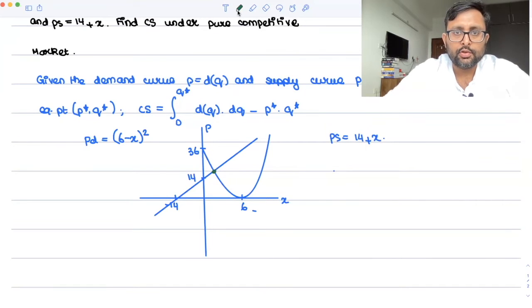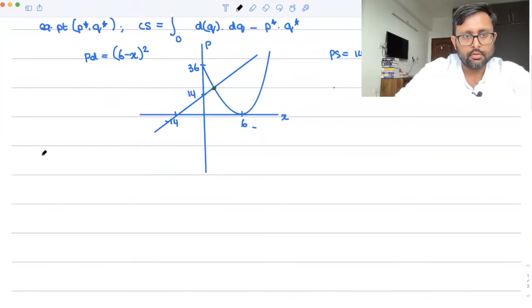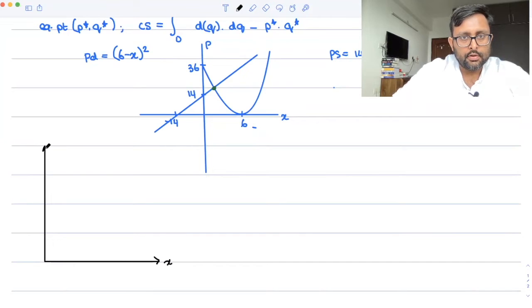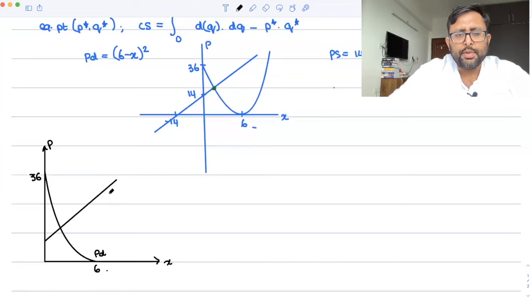So I'll again draw this with the values which I want. So you have x, you have price. This is going to be the demand curve. And this is what my supply curve is. This point is 36, this point is 6. This is what my supply function is and this is what my demand function is.